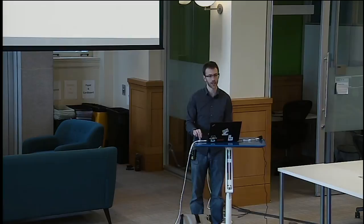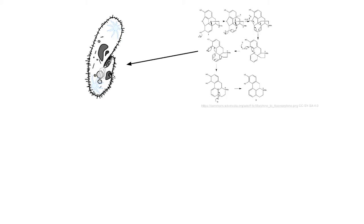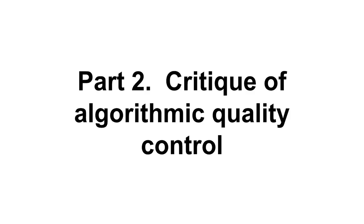A paramecium is a complex system of the interactions of chemicals — there's no higher order than the chemicals interacting with each other, and a paramecium emerges from that. Wikipedia is a complex system of the interactions of people and the technologies they built — whether it's MediaWiki, the core platform, third-party software like the vandal-fighting bots and human computation interfaces, or the norms and policies they build. There's no one in charge. This stuff comes together and Wikipedia emerges. That brings me to the critique of the algorithmic quality control system.